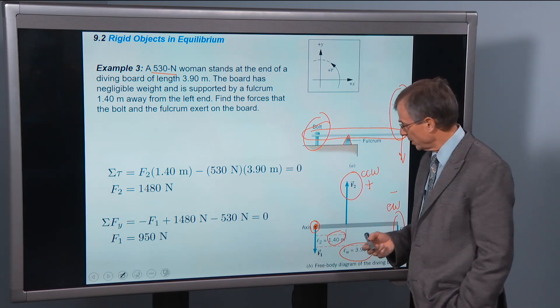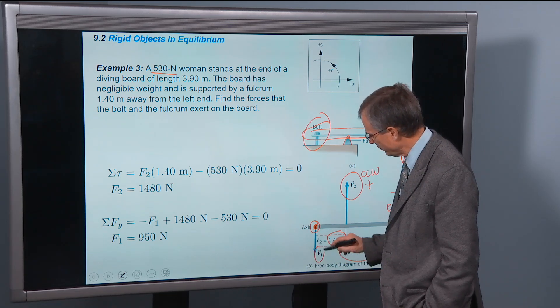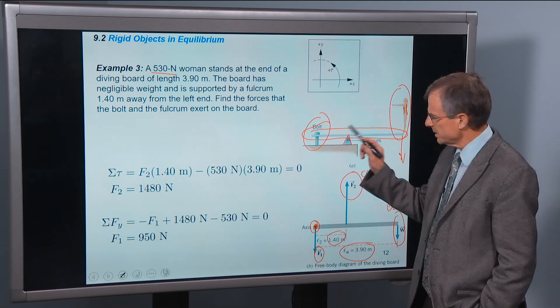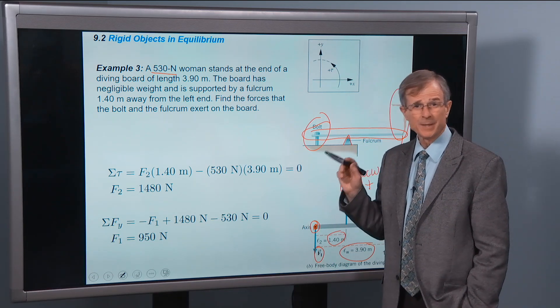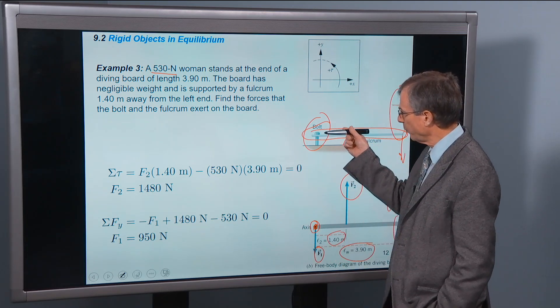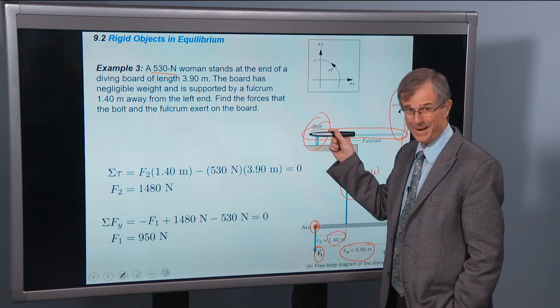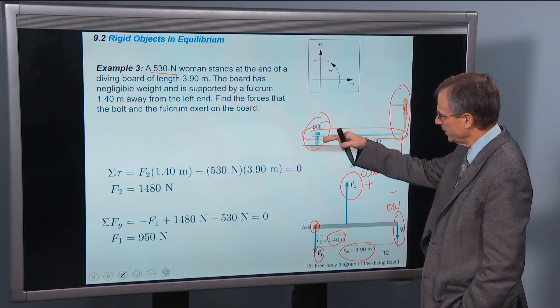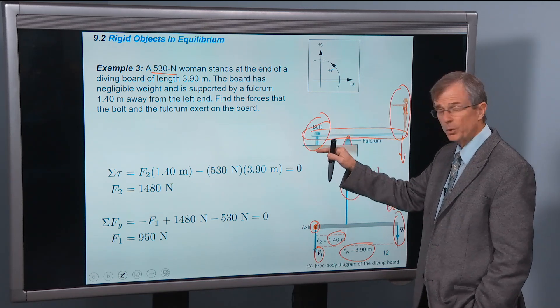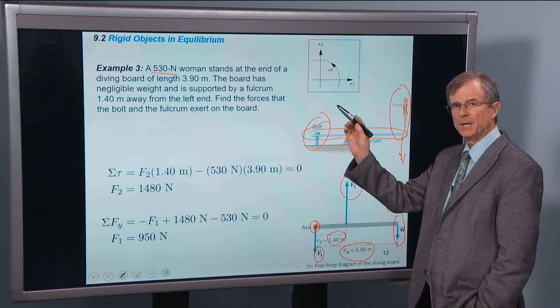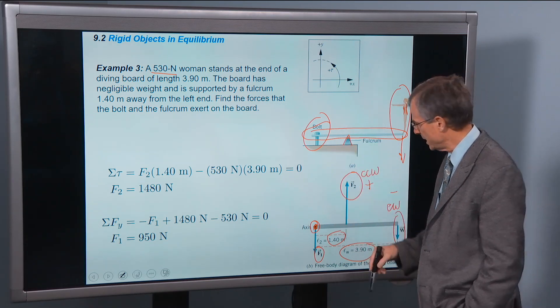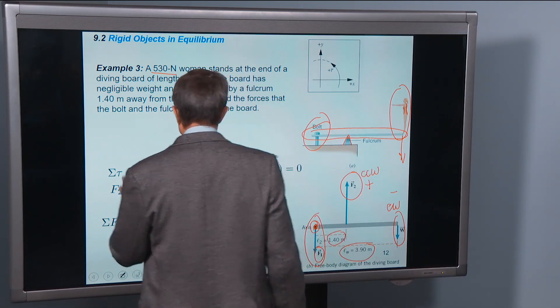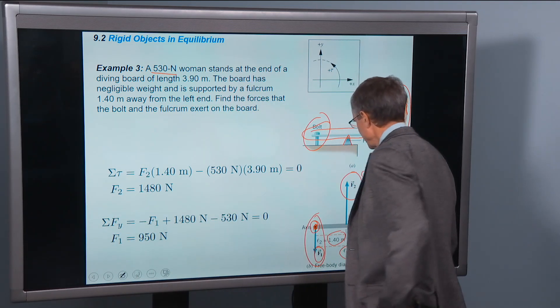So we expect this one to be positive and this one to be negative. Let's actually add up the torque. There is one other force, this force F1. Now let's think about that one. What is the direction of the force of the bolt on the board? If the bolt were not there, then this woman pushing down here would cause this end of the board to come down, this end of the board to come up. So it's the bolt that stops it from coming up. Therefore that bolt must exert a force that's down. And that's this force right here.